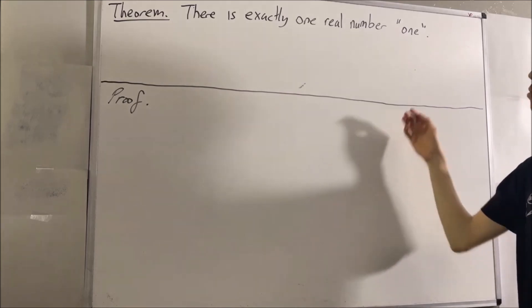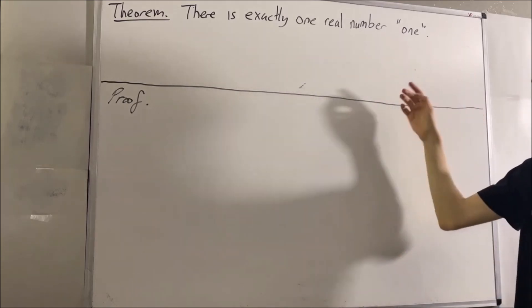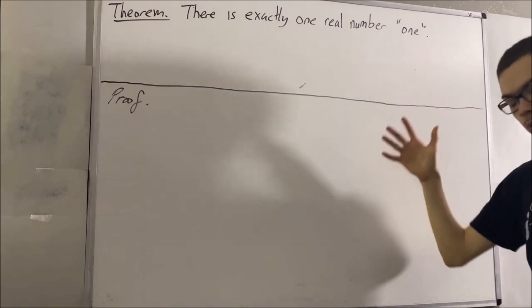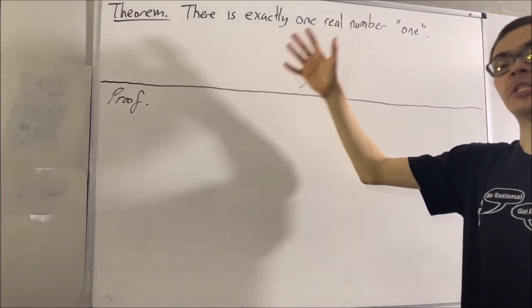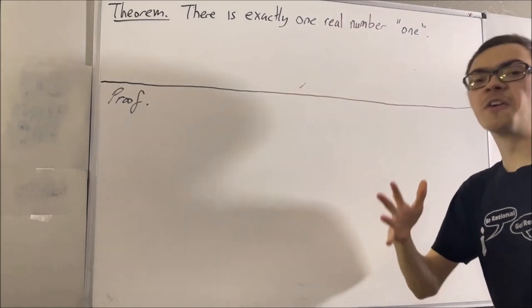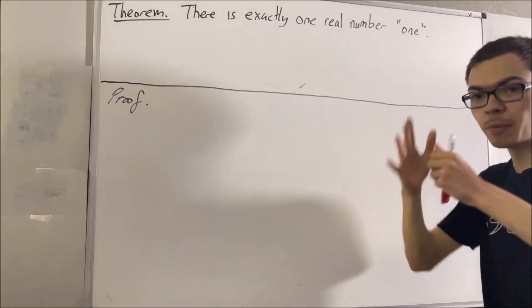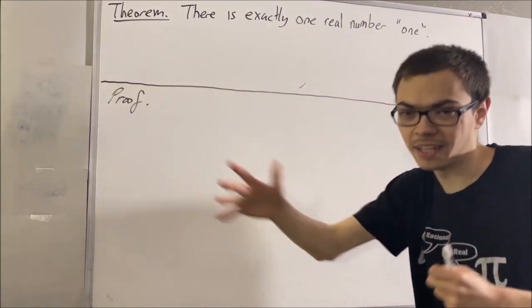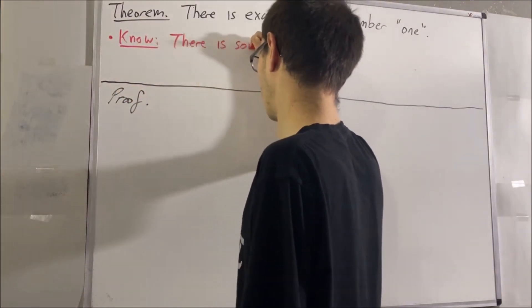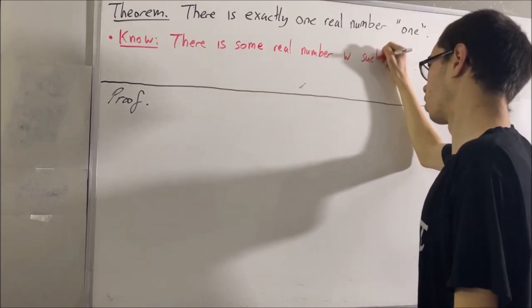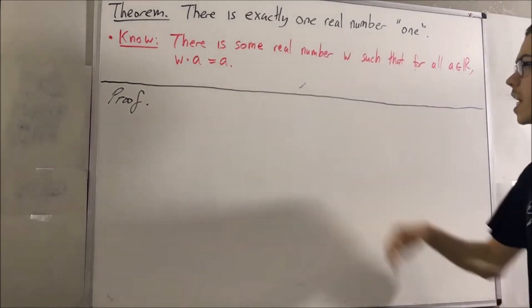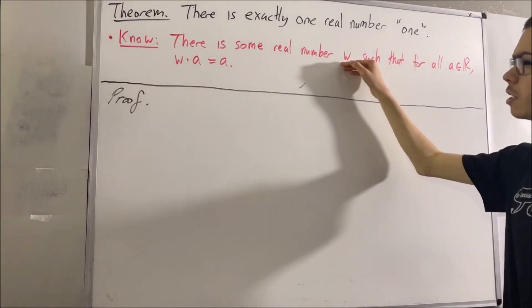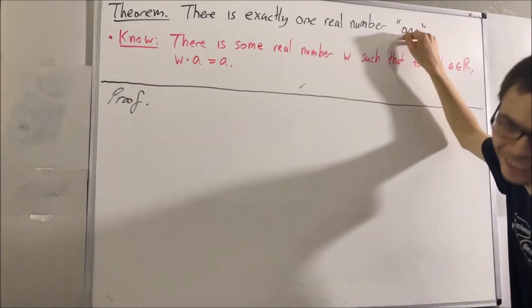So what is the real number one? Well, if you recall from the field properties of the real numbers, there exists a real number w such that for all real numbers a, w times a is equal to a. And this real number w is what we call a one, right?